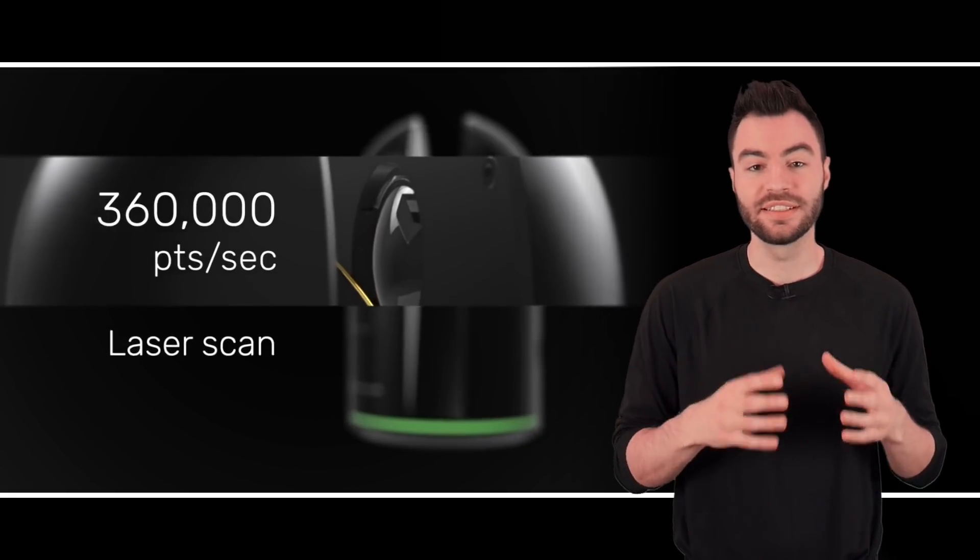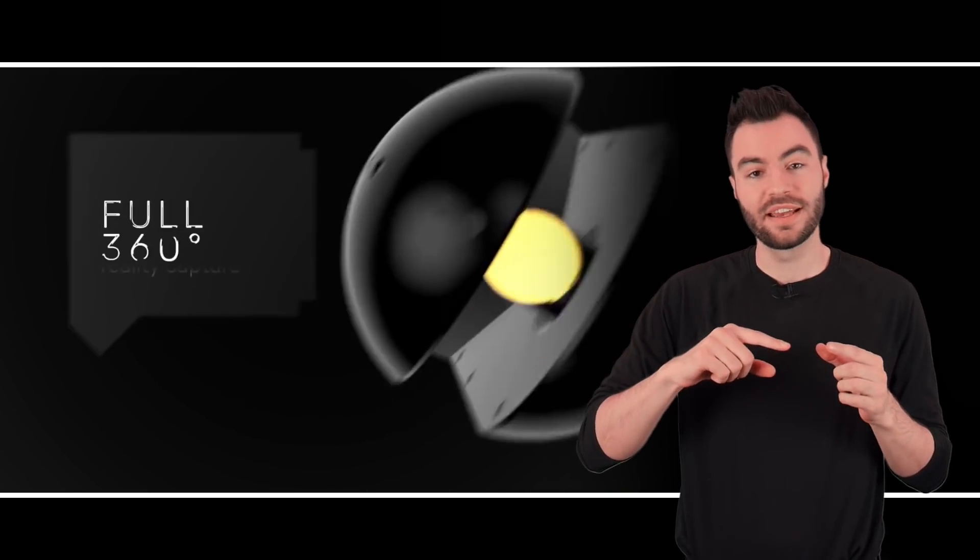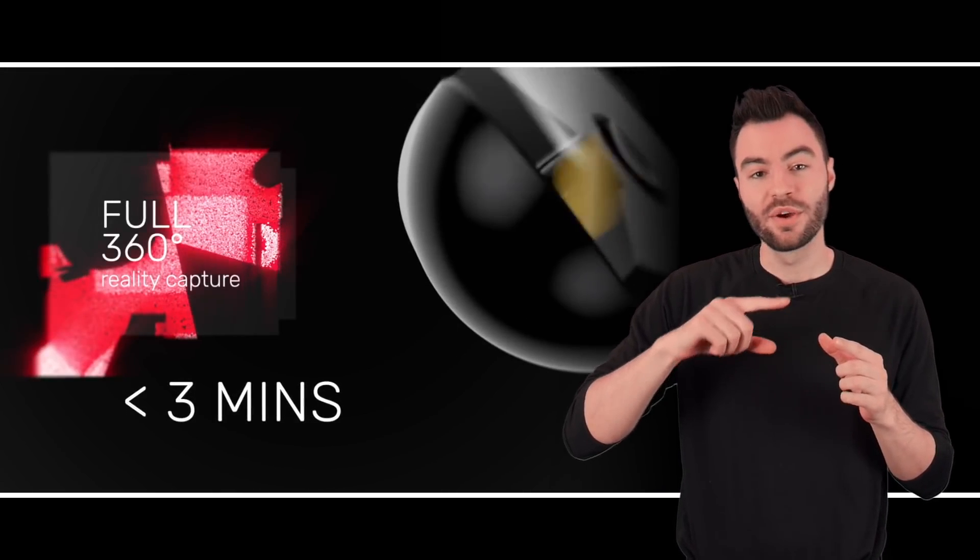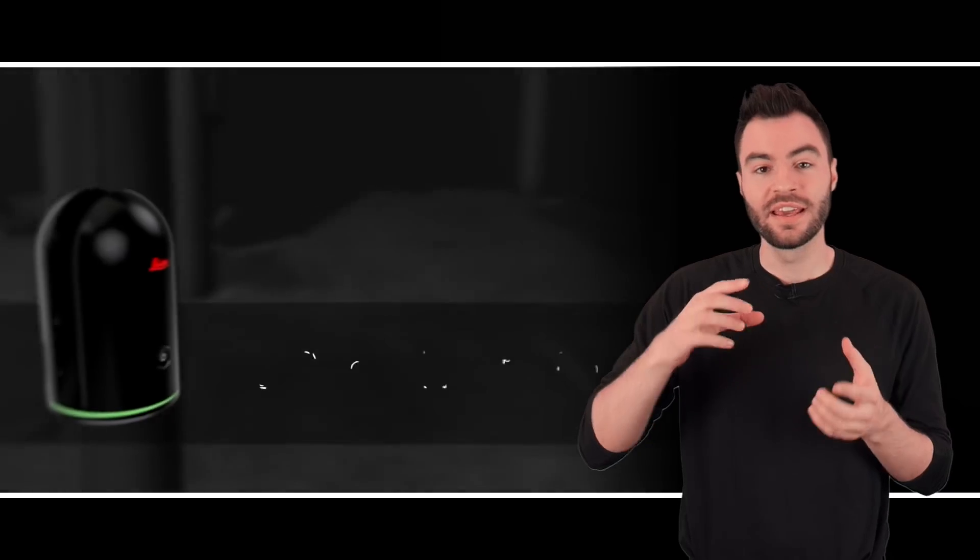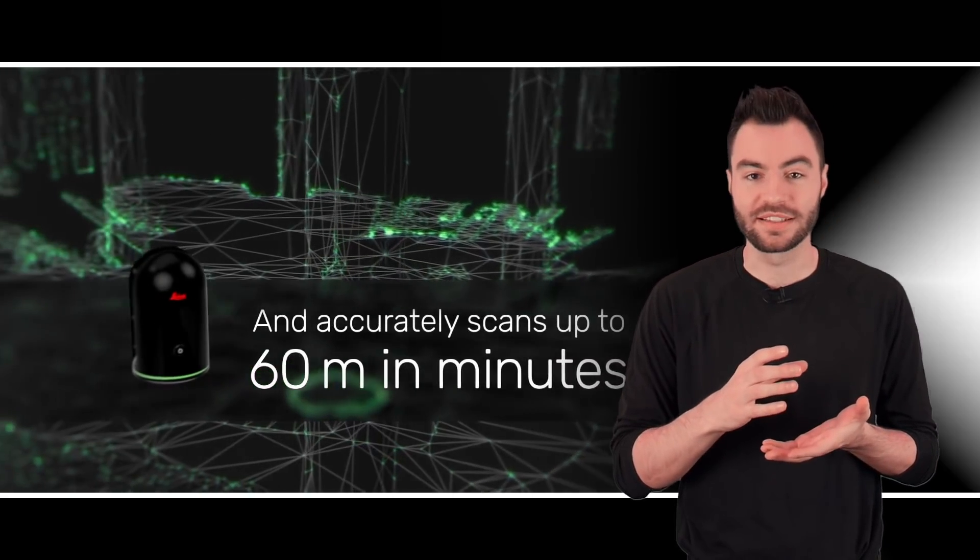The BLK360 has a laser distance meter but it also has a rotating mirror which rotates around the horizontal axis, and the BLK itself rotates around the vertical axis.